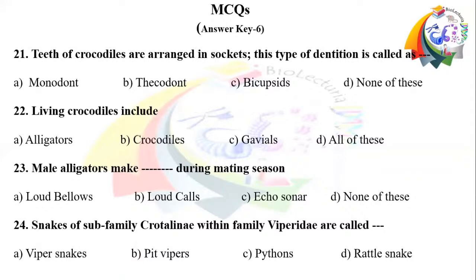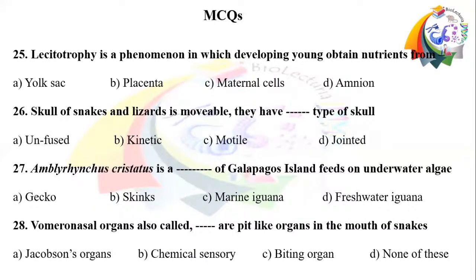Question number 25: Lecitotrophy is a phenomenon in which the developing young obtain nutrients from. Option A: yolk sac. Option B: placenta. Option C: maternal cells. Option D: amnion.